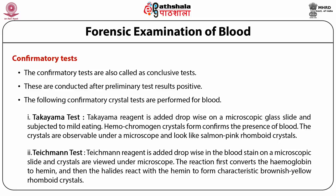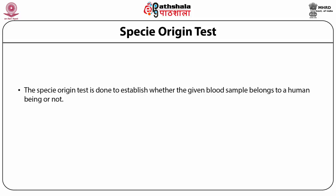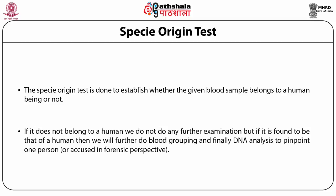Once it is ascertained that the given liquid is blood, we would test for species of origin. The species origin test is done to establish whether the given blood sample belongs to a human being or not. If it does not belong to a human, we do not do any further examination. But if it is found to be human, we will further do blood grouping and finally DNA analysis to pinpoint one person or accused in a forensic perspective.